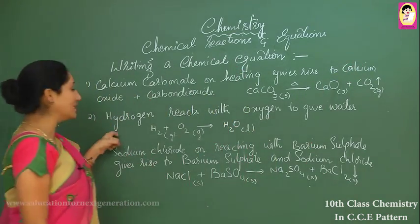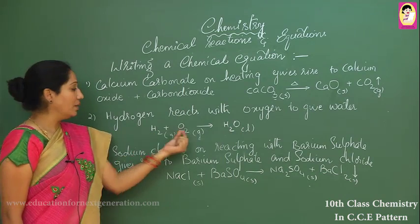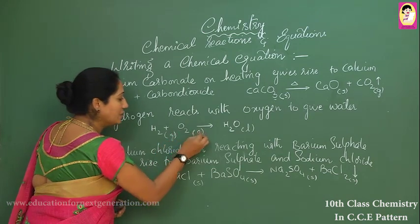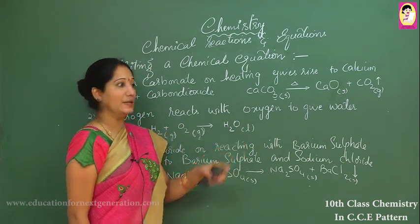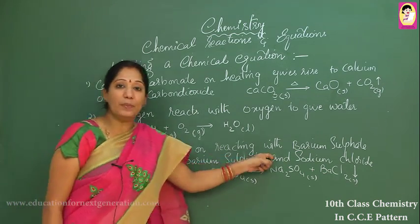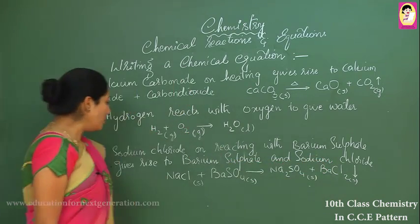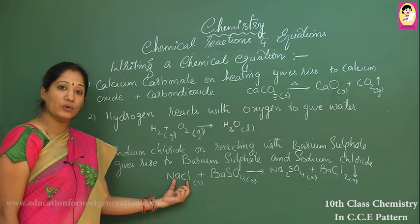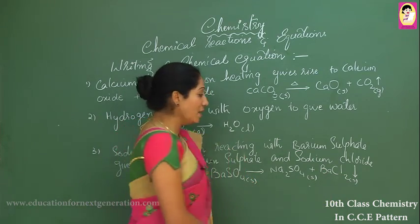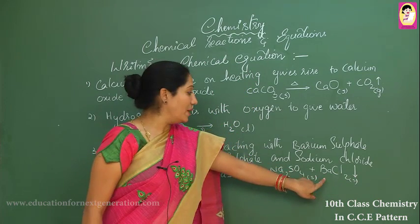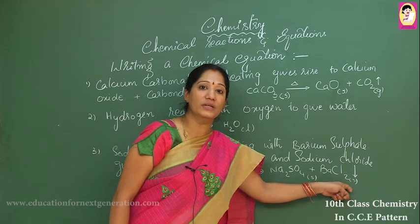For the equation: hydrogen (g) reacts with oxygen (g) to give rise to water (l) — 'l' indicating a liquid. Next, sodium chloride reacting with barium sulfate gives rise to sodium sulfate and barium chloride. The equation shows one mole of NaCl reacts with one mole of barium sulfate to give one mole of sodium sulfate and one mole of barium chloride. The downward arrow indicates barium chloride is obtained as an insoluble solid — a precipitate.